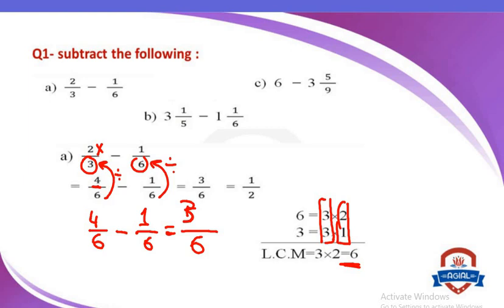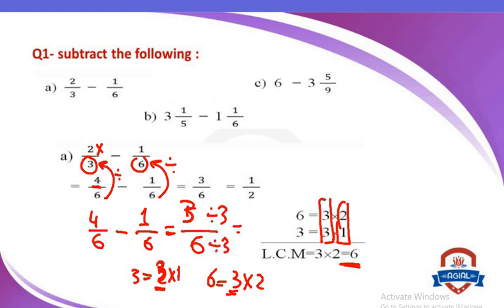Now, is 3 over 6 in its simplest form? Let's check. 3 equals 3 times 1, and 6 equals 3 times 2. There is a common factor of 3. So divide both numerator and denominator by 3: 3 divided by 3 equals 1, and 6 divided by 3 equals 2. So 3 over 6 simplifies to 1 over 2, which is the simplest form.